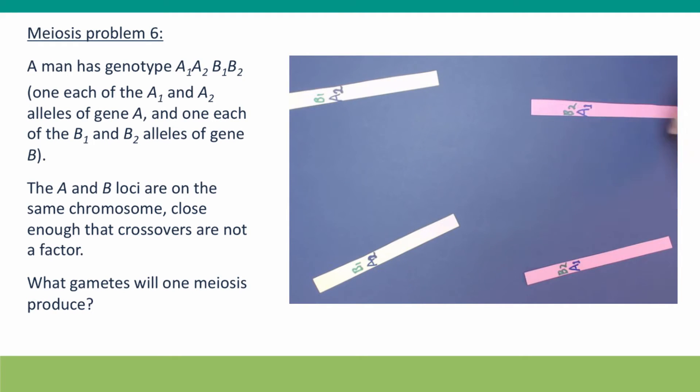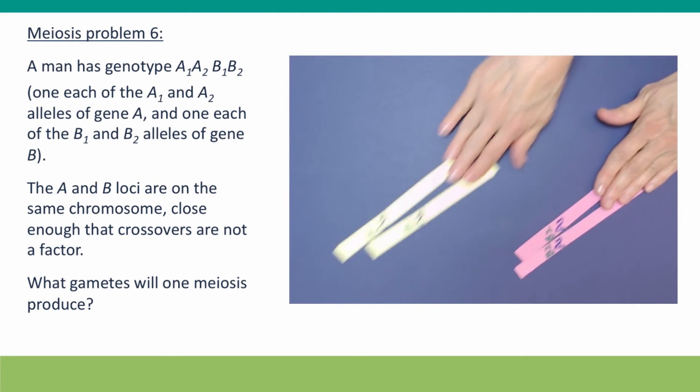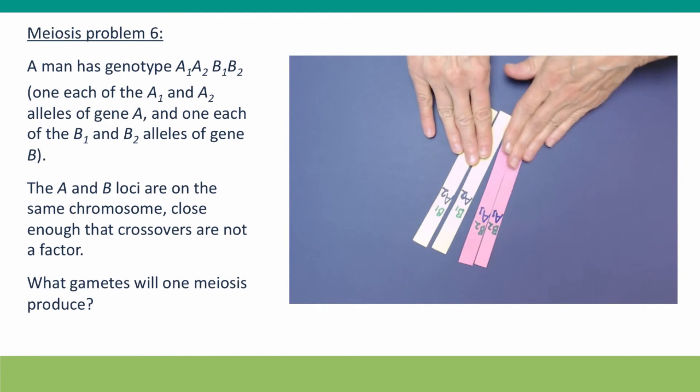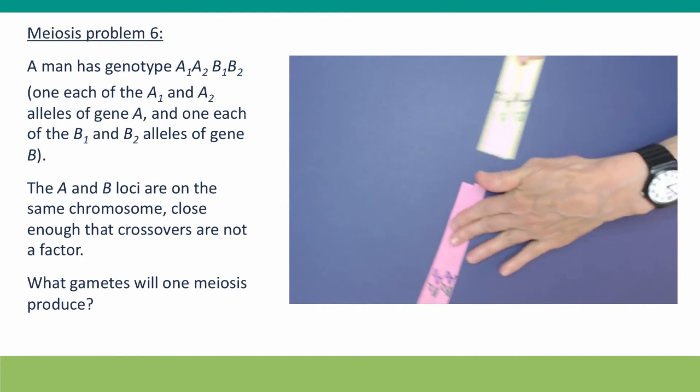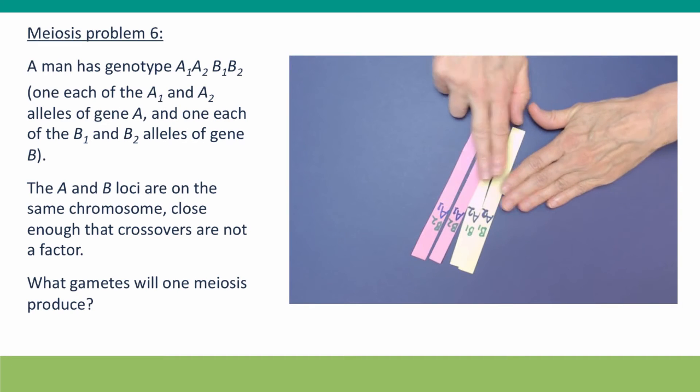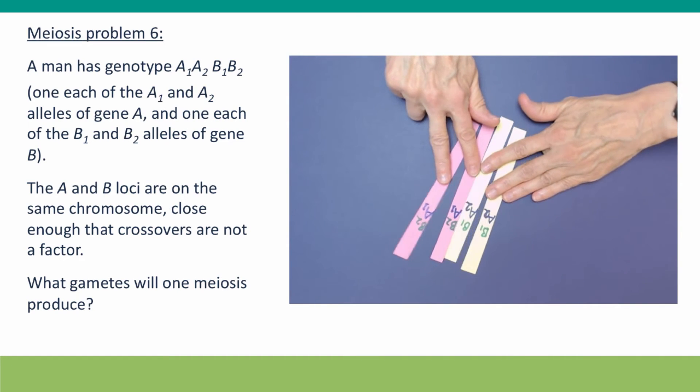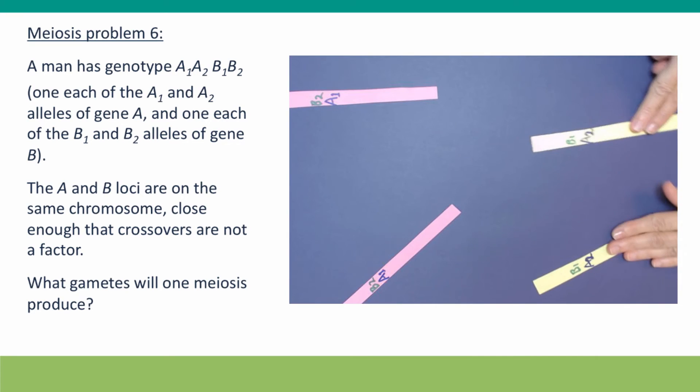But there's only one way these chromosomes... It's true, they could line up this way or they could line up this way, but the outcome is going to be the same. We're going to have two B2A1 gametes and two B1A2 gametes. What's the additional information that we need?